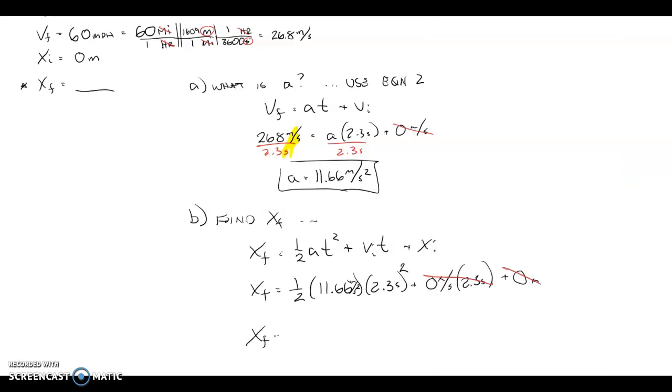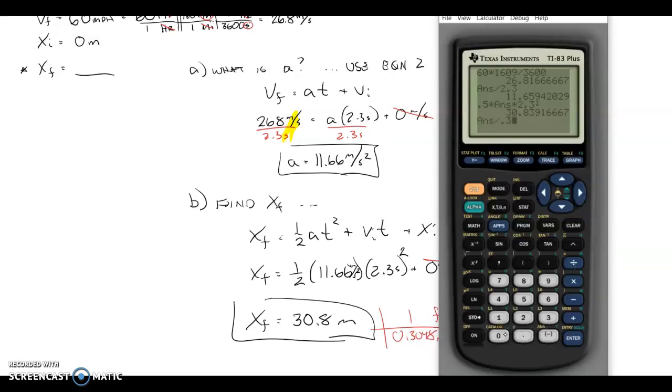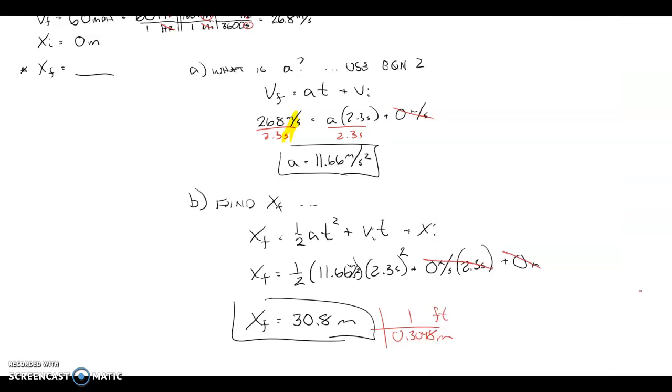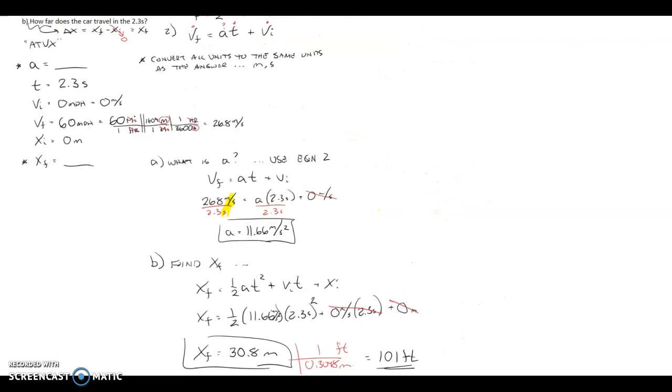X final is about 30.8 meters. That's how far the car is going to travel in that time period. If we wanted to, we can convert that to feet. If we were going to do a conversion to feet, 1 foot is 0.3048 meters. We can do a quick conversion. If I divide it by 0.3048, I get the number of feet, which turns out it's over just about 100 feet, 101 feet of distance to put it in perspective. If you're a baseball guy, a 90-foot baseline, so 100 feet, you would be just past first base in this car, and you would already be going 60 miles an hour.